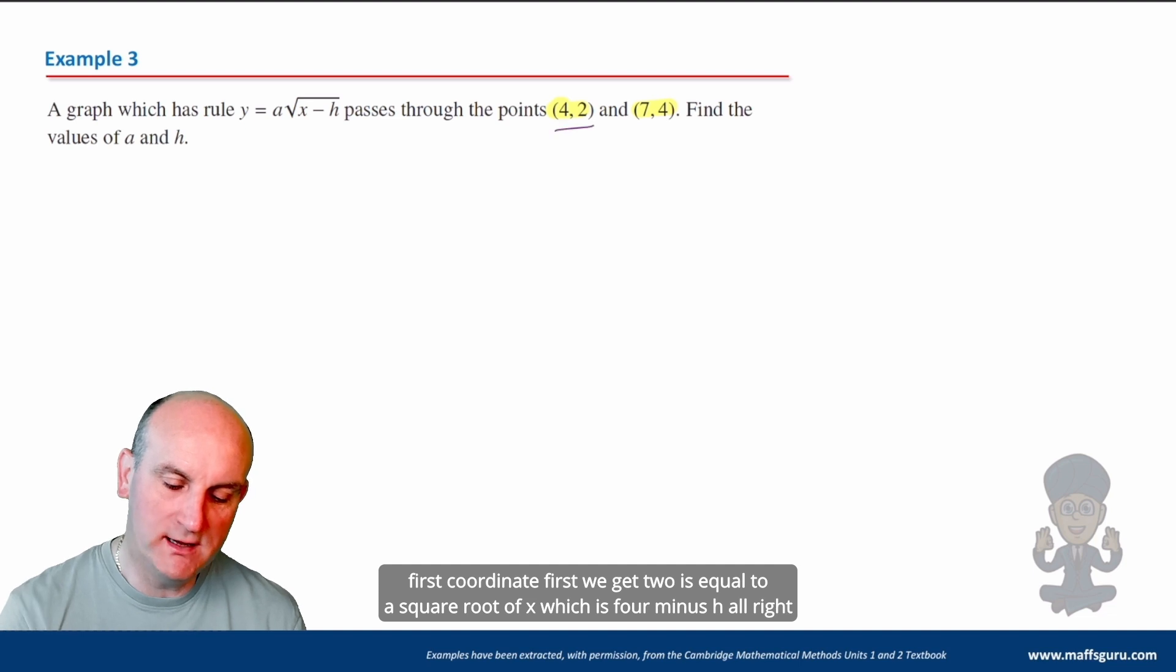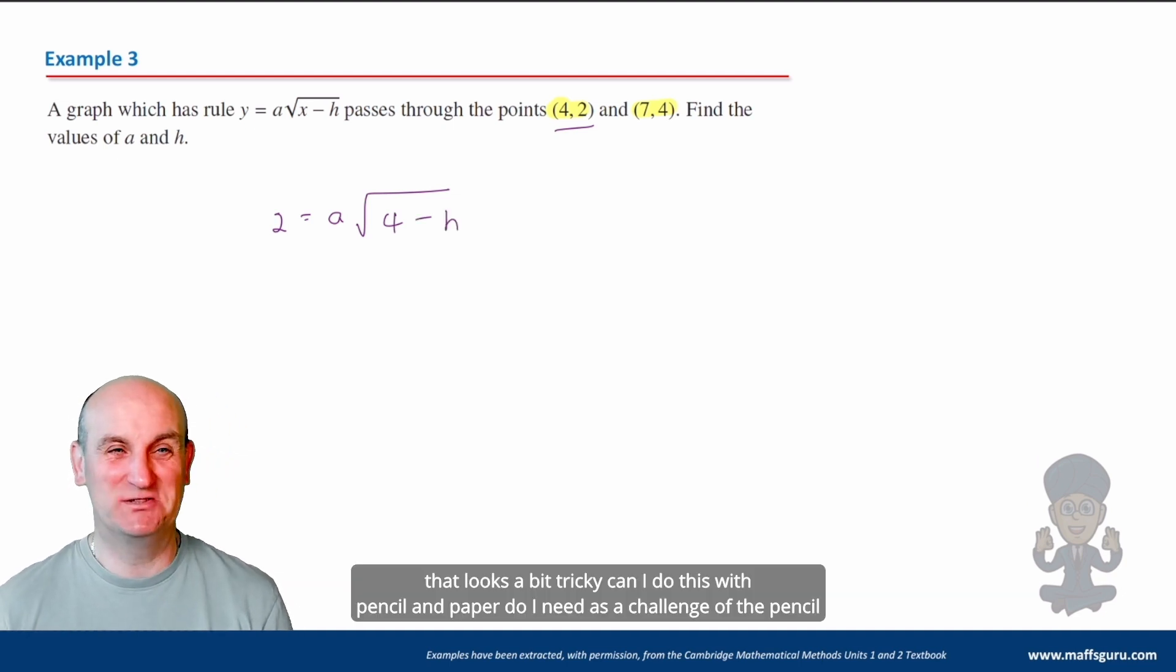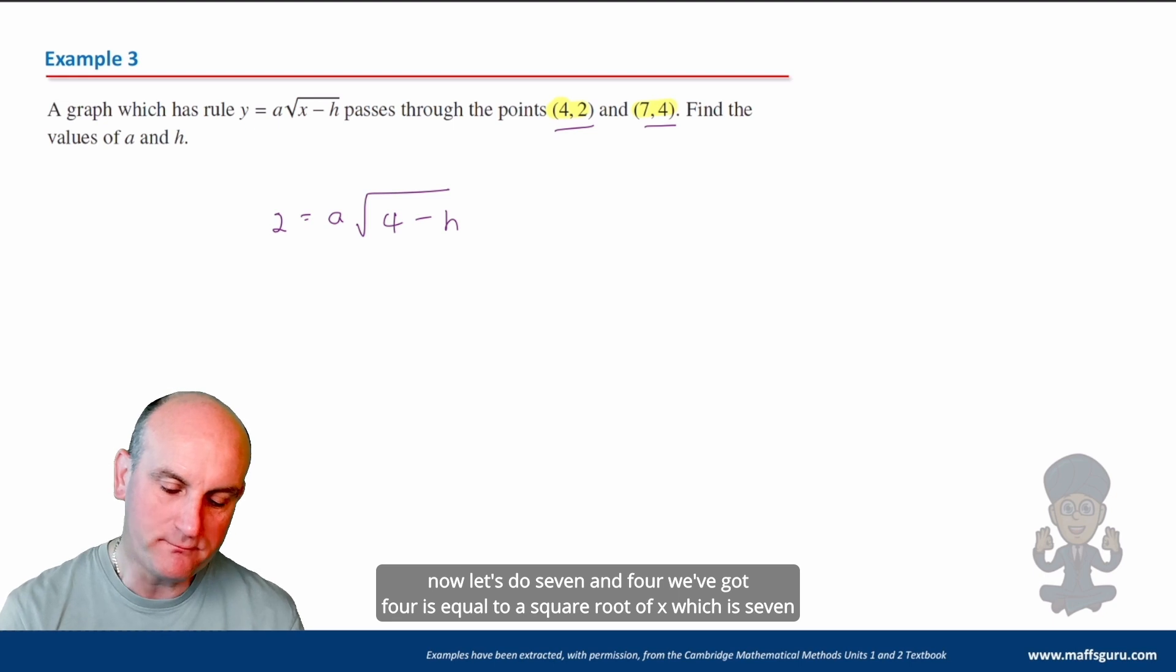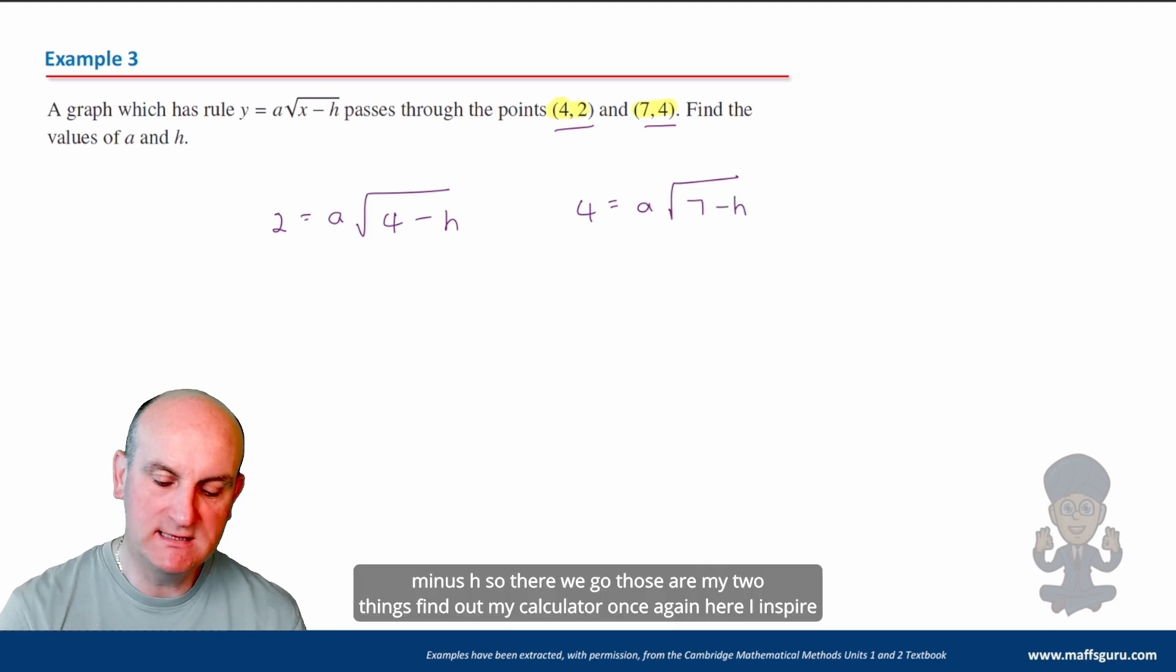So let's do the first coordinate first. We get 2 is equal to a√(x), which is 4 minus h. All right. Oh, that looks a bit tricky. Can I do this with pencil and paper? Do I need it as a challenge of the pencil and the paper? Huh? No, I'm going to do this one using my CAS. Find the values of a and b. Right. Now let's do seven and four. We've got 4 is equal to a√(x), which is 7 minus h. So there we go. Those are my two things.